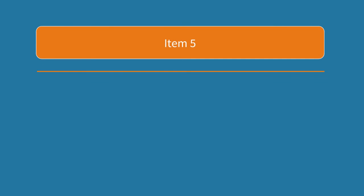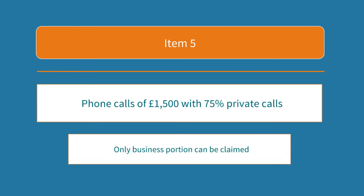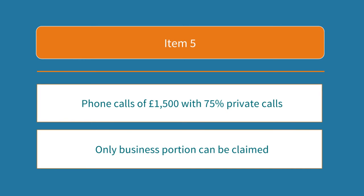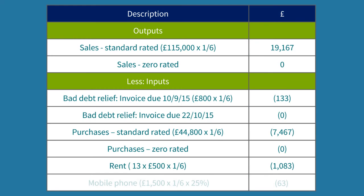Now on to point 5. We have mobile phone calls totalling £1,500 of which 75% were private calls. For VAT we can only claim the business proportion, so 25%. The £1,500 is VAT-inclusive so we take one sixth to get the VAT and then claim the business proportion of 25%, giving us £63 input VAT.